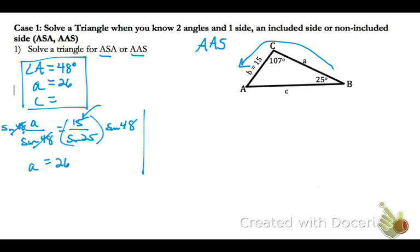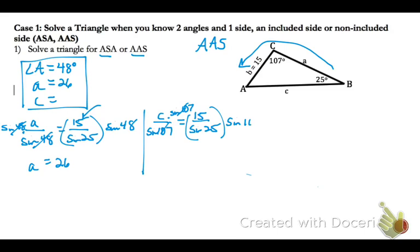Now let's set up and solve for side C. So C over the sine of angle C, which is 107 degrees, equals 15 over the sine of 25. Multiply the left side by the denominator. Take 15 divided by the sine of 25, press enter, then times the sine of 107. Rounding to the ones place, C is 34.